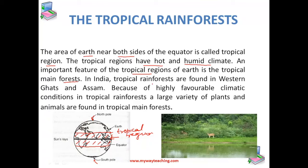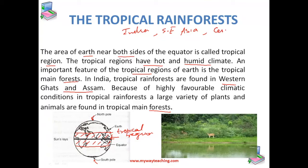In India, tropical rainforests are found in the Western Ghats and Assam. Because of highly favourable climatic conditions, a large variety of plants and animals are found in these forests. These tropical rainforests are also found in Southeast Asia, Central America, and Central Africa.